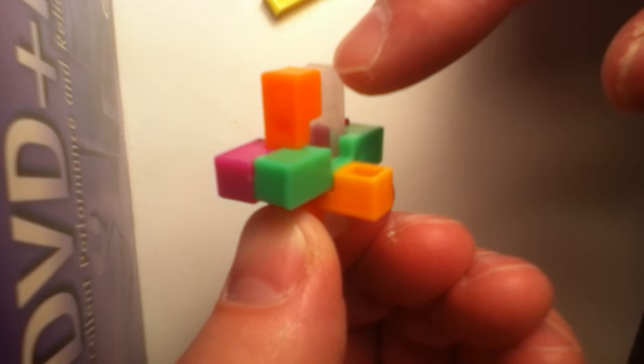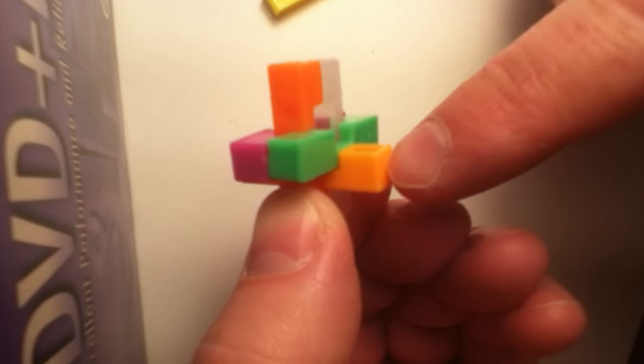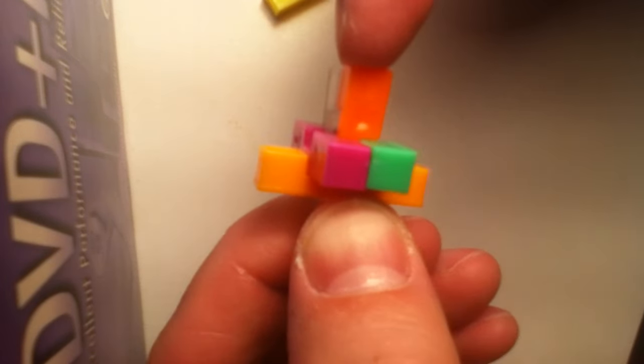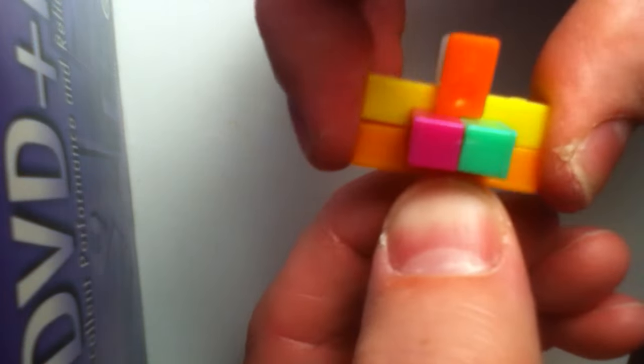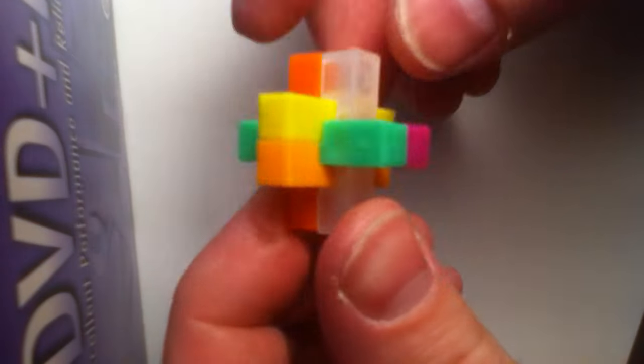So we put in the clear, the orange E on top of it, slid the green one in, put the orange one which is the opposite of the green one, then the purple. Now the yellow can easily slip right in. There you have it. Finished puzzle.